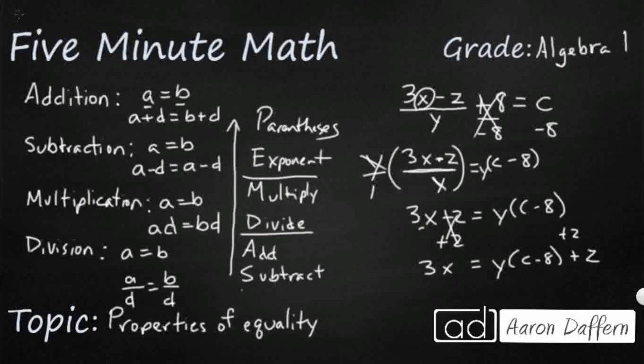Now I can finally use my division property of equality because I'm going to divide both sides by three. So that's going to cancel itself out. Well, three over three just makes one. So I finally isolated X and it turns into this ginormous problem that I can't solve unless I know values for Y, C or Z. But that's how we use the properties of equality.